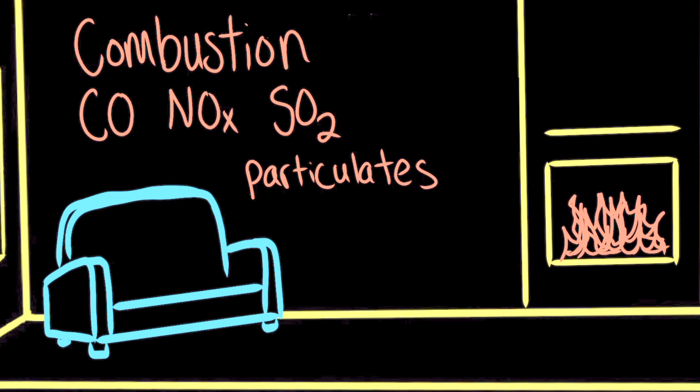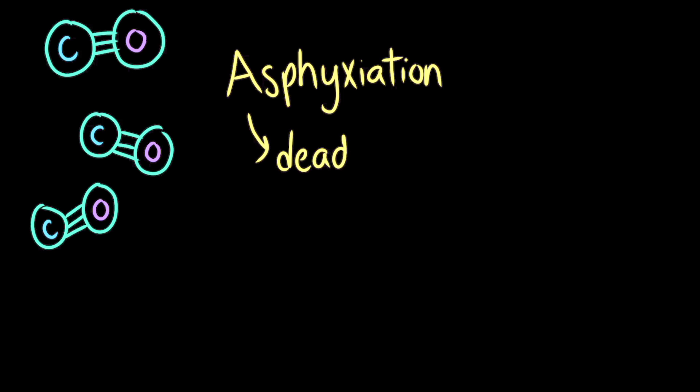One way that carbon monoxide can build up inside a building is from a poorly maintained furnace. Carbon monoxide molecules have a secret weapon. They can trick the proteins in your blood into thinking they're oxygen. This can cause asphyxiation, which is when the body cannot get enough oxygen, and it can be deadly. Ava should make sure that her furnace is well maintained and serviced regularly.